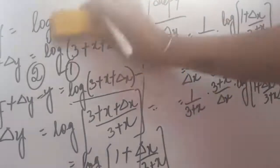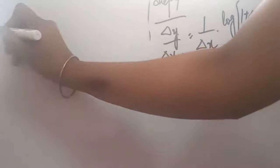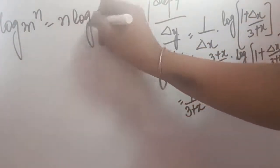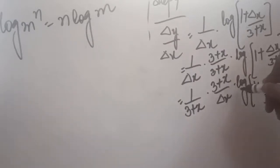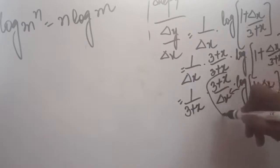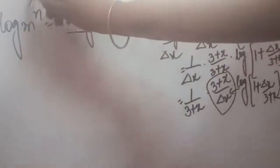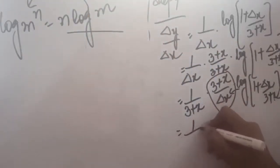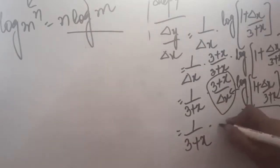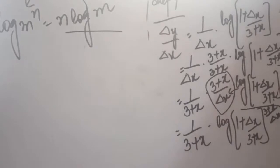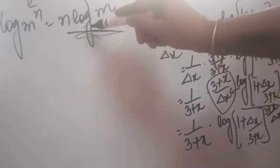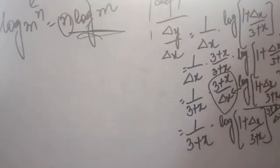Now another principle of logarithm can be applied here. If you remember, we have done one more principle of log: if log m is having power n, the n can be brought further — log m raised to power n can be written as n log m. I am going to apply this property of logarithm here. So we can write 1/(3 + x) into log of (1 + delta x/(3 + x)) with its power being (3 + x)/delta x. So n which was written further has been made the power.